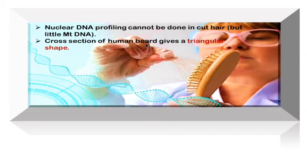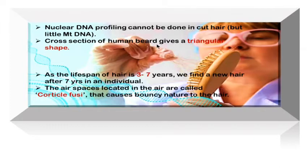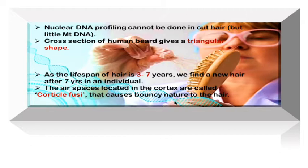The cross-section of human beard gives a triangular shape. The actual lifespan of hair is three to seven years — after seven years you effectively have brand new hair. Spaces located in the cortex are called cortical fusi, which give the bouncy nature to the hair. They are mostly present in the root part and give shape and form to the hair.